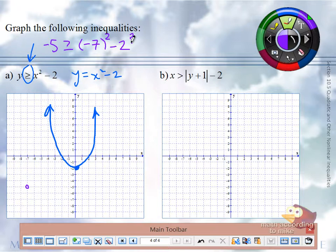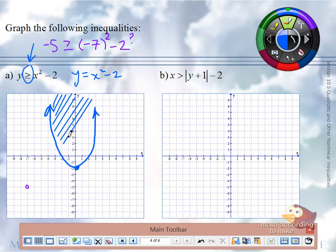Alright. So, negative 7, negative 5 is outside of the bowl. It made it false. So, what points make it true? Inside. We're going to just shade inside. No different than what we did before when we had lines. Draw your boundary. Take a point.